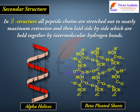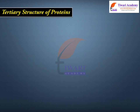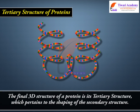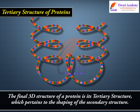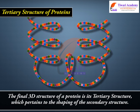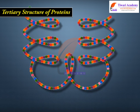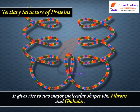In beta structure, all peptide chains are stretched out to nearly maximum extension, and then laid side by side, which are held together by intermolecular hydrogen bonds. The final 3D structure of proteins is its tertiary structure, which pertains to the shaping of the secondary structure. It gives rise to two major molecular shapes: fibrous and globular.